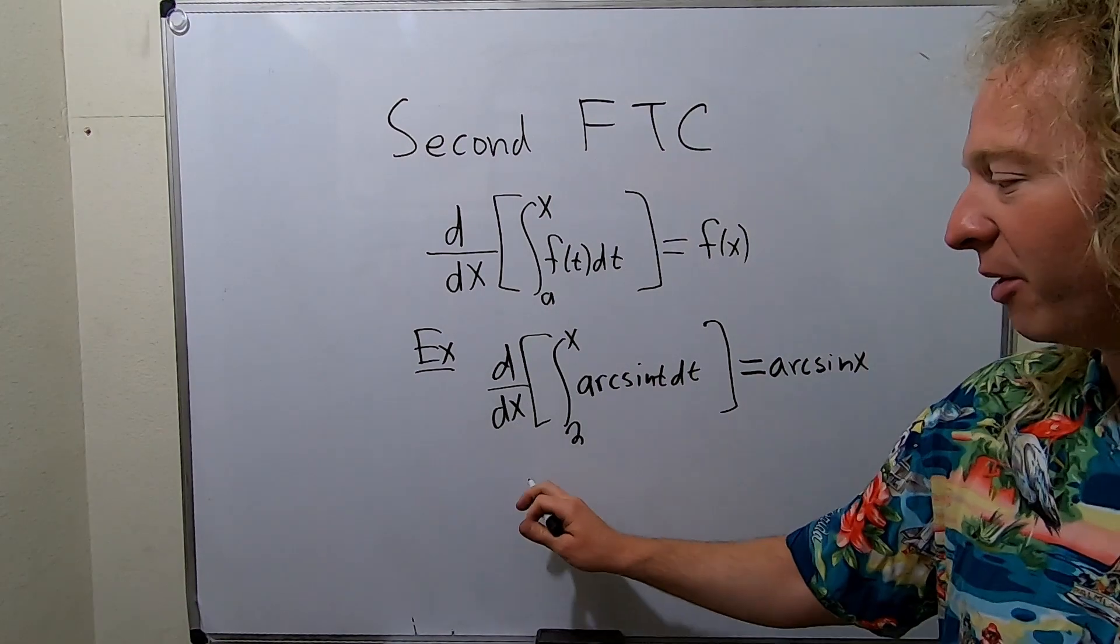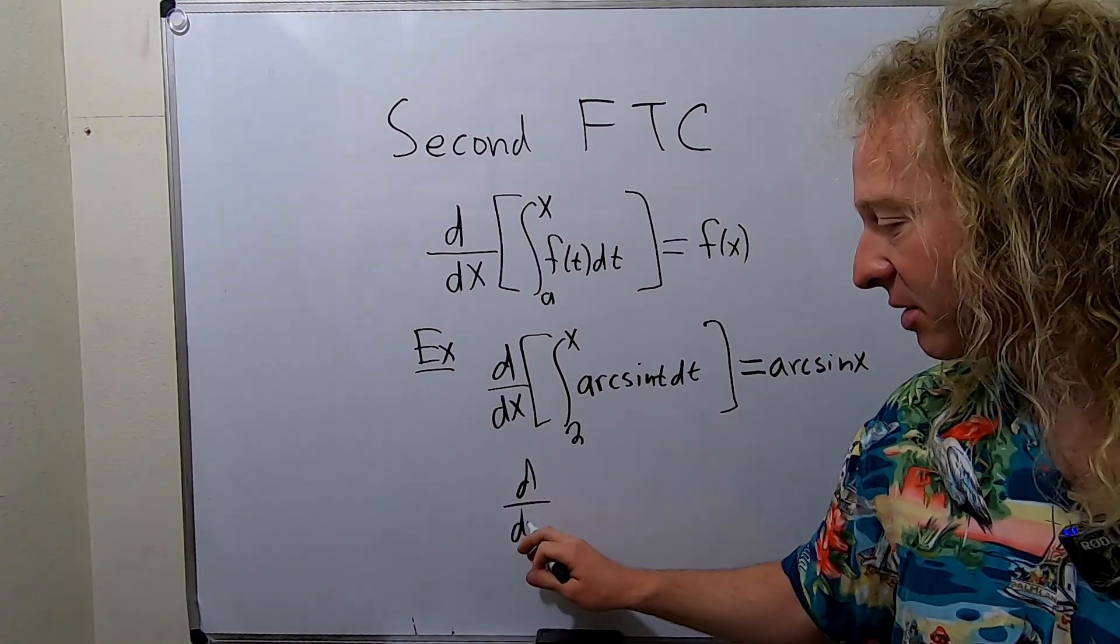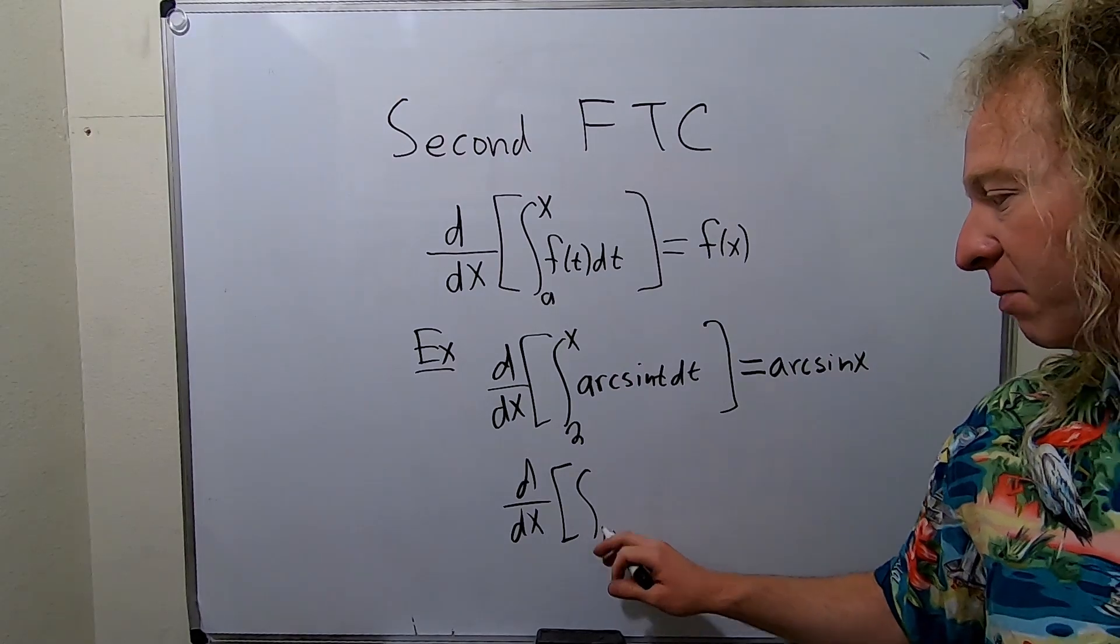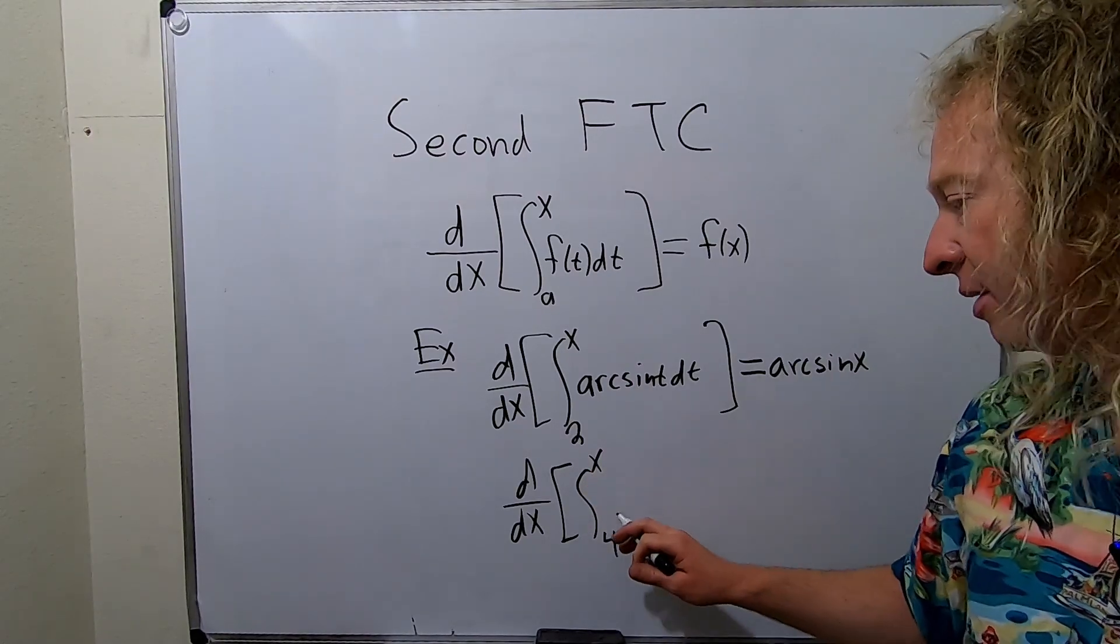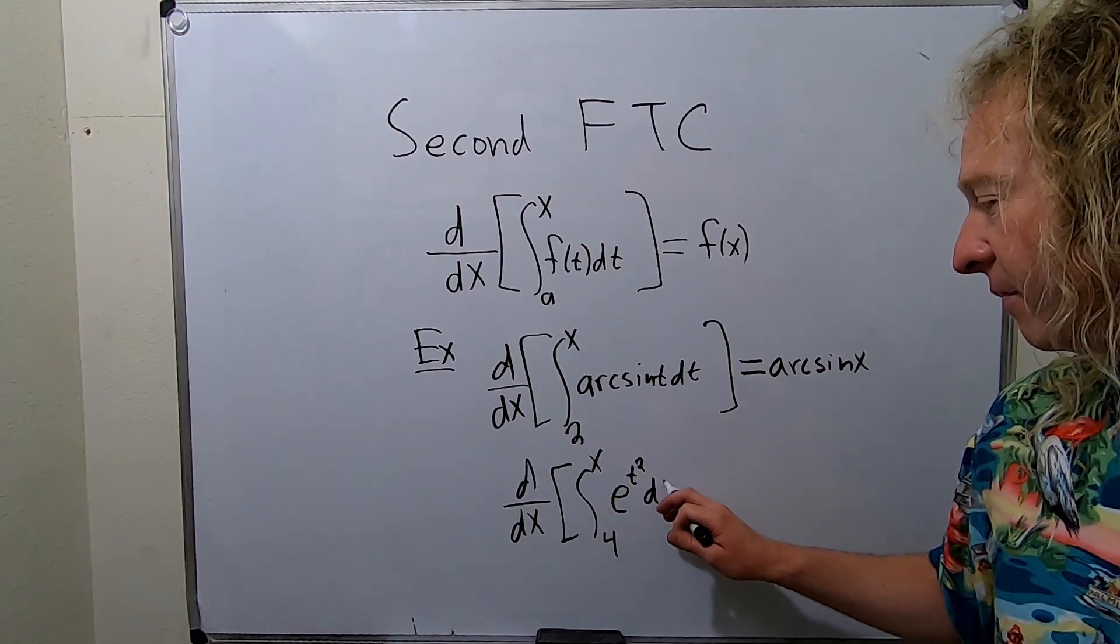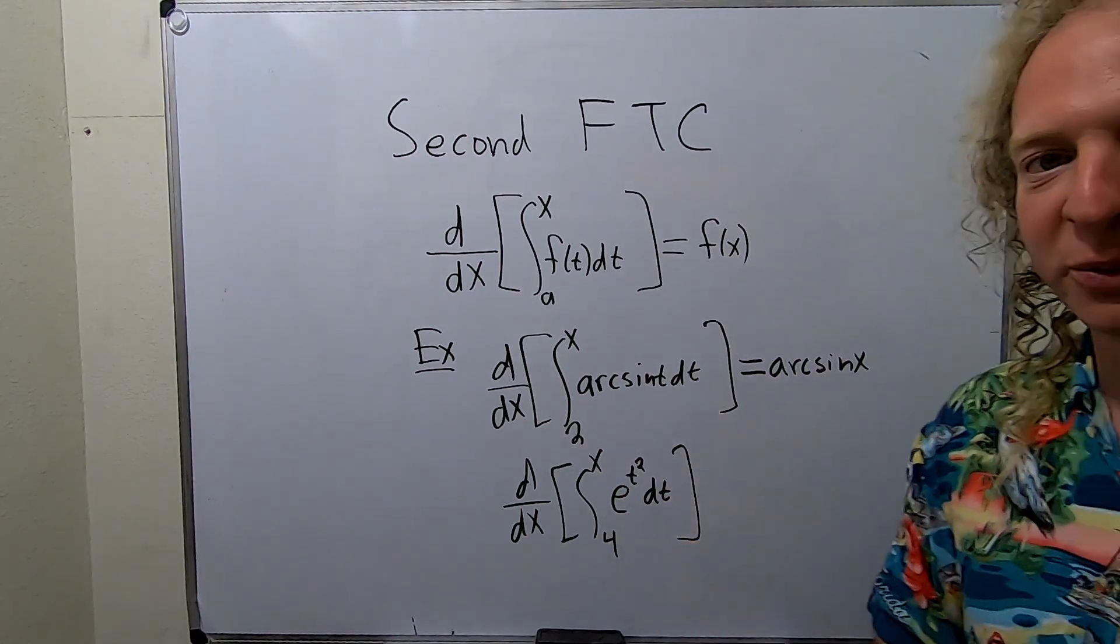So let's do another one, one more, so you see how simple it is. d dx. Let's do 4. Let's put an x here. And let's put e to the t squared dt. That's a fun one.